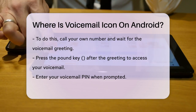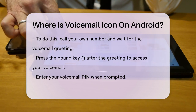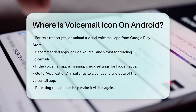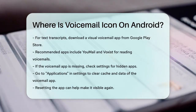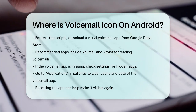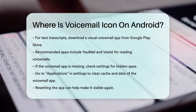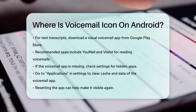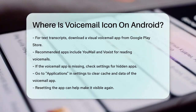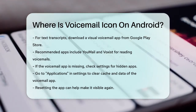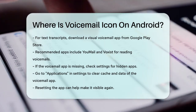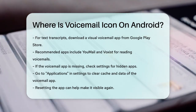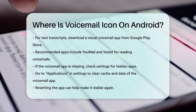In some cases, if you can't find the voicemail app or icon, it might be hidden or there could be an issue with the app itself. To resolve this, go to your settings, select Applications, find the voicemail app, and clear its cache and data. This should reset the app and make it visible again.